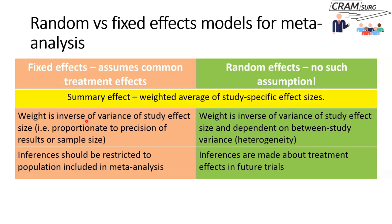In fixed effects modeling, the weight is the inverse of the variance of the study effect size. In other words, you give more weight to a study where the effect size is more precise. What gives you a very precise effect size with narrow confidence intervals? A large study. The larger the sample size, the more confident you are in your results, and therefore the more weight that study receives. In random effects modeling, the weight takes into account not only the variance or precision, but also between-study variance — that is, heterogeneity.